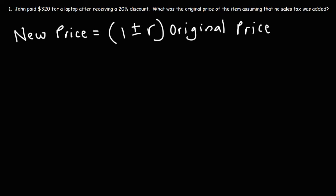The new price or the final price is basically the final amount that John paid for the laptop after the discount. So that's going to be $320. R, you can think of R as the interest rate or the discount. R is the percentage.